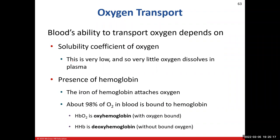Let's talk about oxygen transport — how oxygen gets inhaled, enters the blood, and travels to the systemic cells. We need to consider what factors affect its ability to diffuse from the blood into the tissues. Recall from the second video we talked about the solubility coefficient. Oxygen has a very low solubility coefficient, so we won't see much oxygen dissolve directly in the plasma. It needs a ride — and it has one.